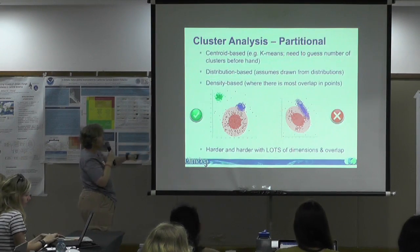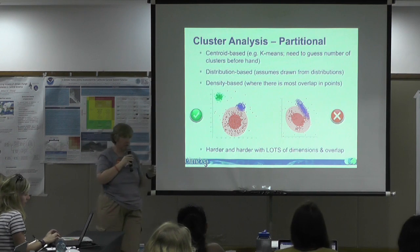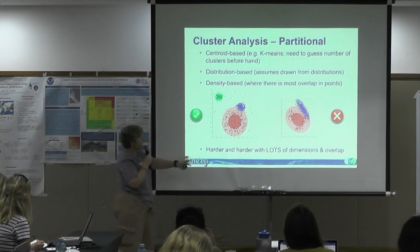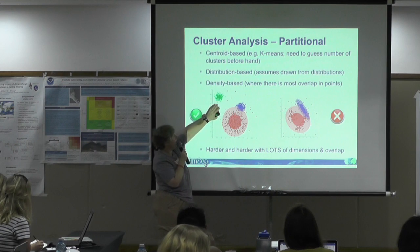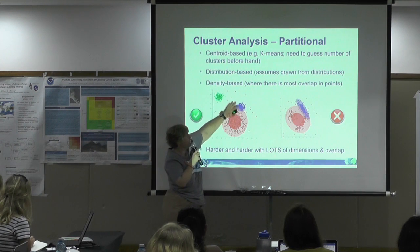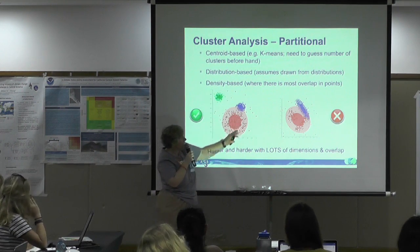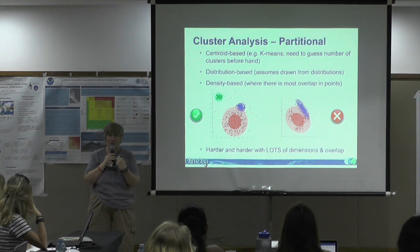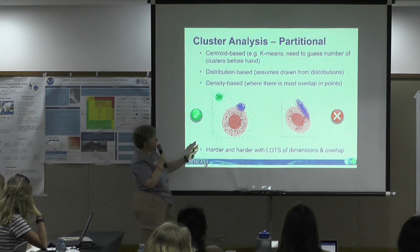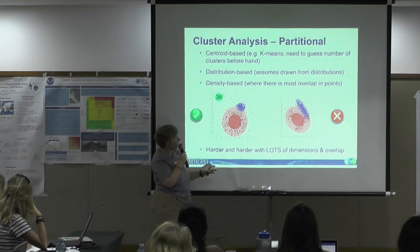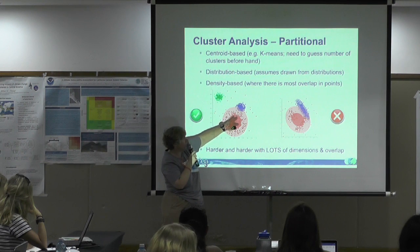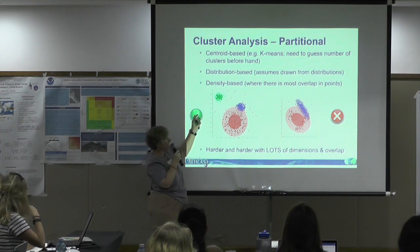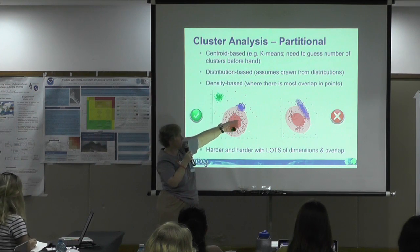There are two different ways of doing cluster analysis. The partition way is where you partition up space. With these clouds of data points, the blue and green might be clearly separate clusters, but the red data has a smearing effect — how do you know it's internally consistent? You look at the density of points: there's a much stronger density of points at the centre than out at the edges of the cloud.